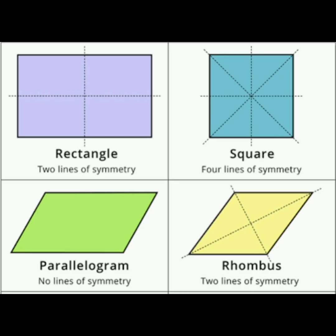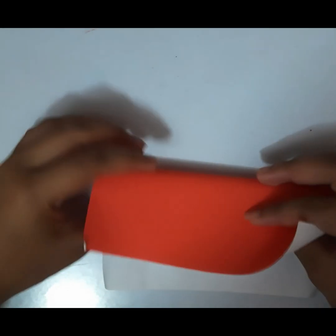Observe the given figure and its line of symmetry. The first one is a rectangle — it has two lines of symmetry. The second one is a square — it has four lines of symmetry. The third one is a parallelogram — it has no lines of symmetry. The fourth one is a rhombus — it has two lines of symmetry.